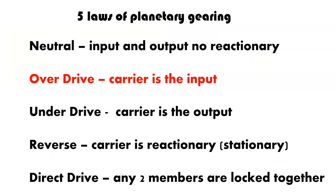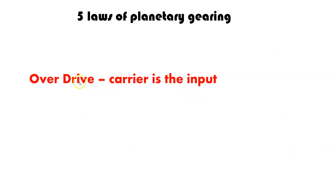Before we go into the other two problems — those are planetary gearing problems — remember there are five laws of planetary gearing. The one we're going to be looking at is the overdrive condition, and that's because the carrier is the input. That's what we're being asked in number two, because we're being asked to find the maximum overdrive, and that's the carrier as the input going in. So that means that motor is directly tied to the carrier.